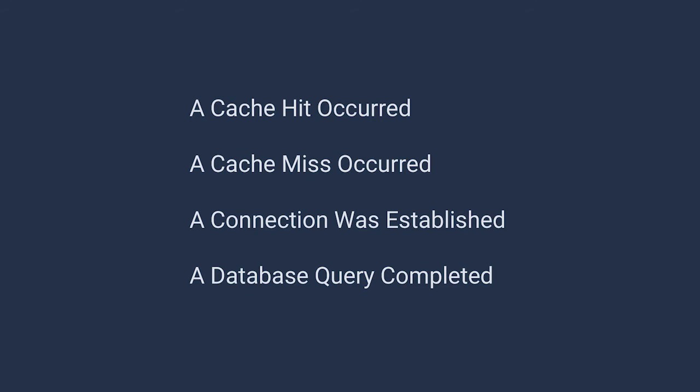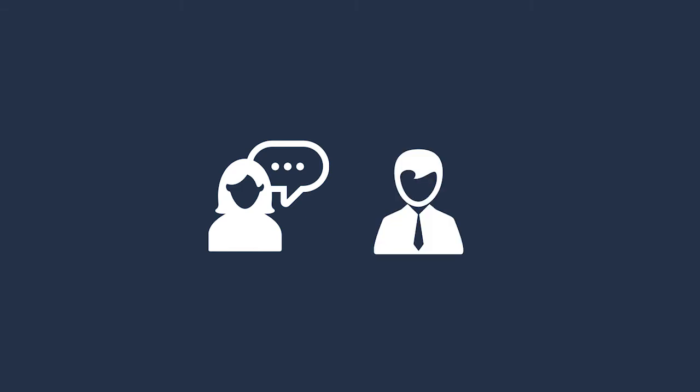A quick and simple heuristic to tell if something may be a domain event is to ask if it's written in the language of the business. Imagine your business exists without technology — does a cache hit mean anything to it? What about adding a product to your shopping cart at a supermarket? If you talk to someone in your company who's not a programmer, does the event make sense? Adding a product to your shopping cart clearly implies you intend to purchase it. But if you talk to somebody in your business about a cache hit and they're not a programmer, I think the concept might be lost without explanation.